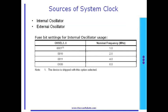We have used the internal oscillator till now. The frequency of the internal oscillator can be set to 1 MHz, 2 MHz, 4 MHz, or 8 MHz. This configuration can be made using a fuse bit. Fuse bits are set using an ISP programmer. A value of 1 in the table indicates unprogrammed status, and a value of 0 indicates programmed status.